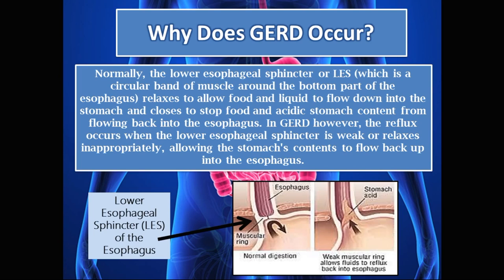So why does GERD occur? Normally, the lower esophageal sphincter, which is a circular band of muscle around the bottom part of the esophagus, relaxes to allow food and liquid to flow down into the stomach, and closes to stop food and acidic stomach content from flowing back into the esophagus. In GERD, however, reflux occurs when the lower esophageal sphincter is weak or relaxes inappropriately, allowing stomach content to flow back up.